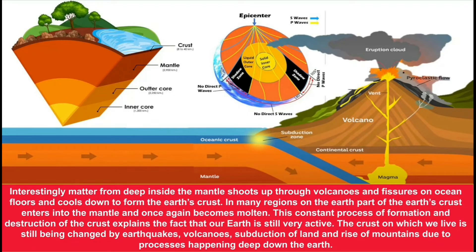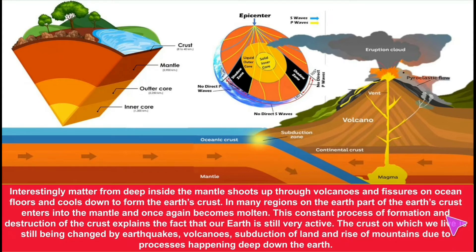The outer core is liquid in state. Matter from deep inside the mantle shoots up through volcanoes and fissures on the ocean floor and cools down to form the earth's crust. In many regions, part of the earth's crust enters into the mantle and once again becomes molten. This constant process of formation and destruction of the crust explains why our earth is still very active.